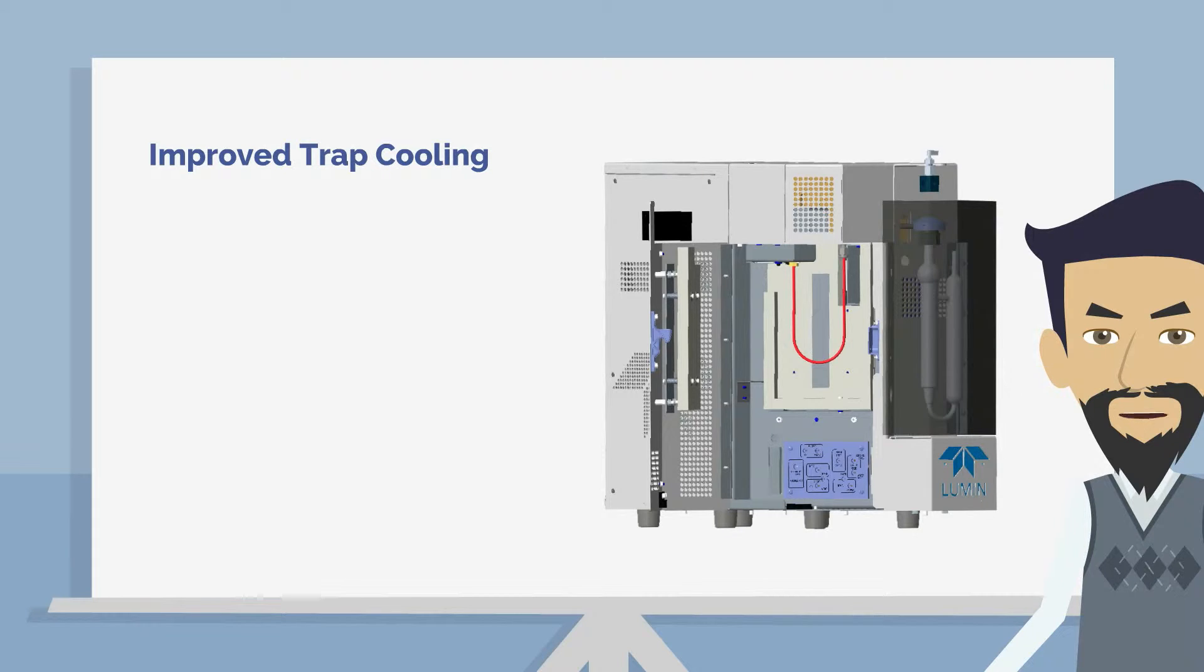One of the new features is improved trap cooling performance. Unlike previous models that pulled air from within the concentrator for trap cooling, the Lumen pulls air from outside the unit, improving its cooling efficiency.